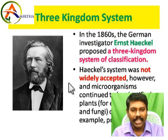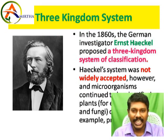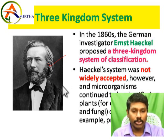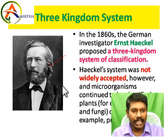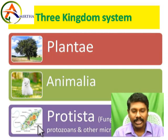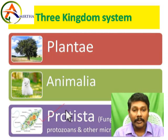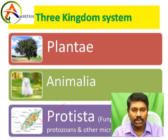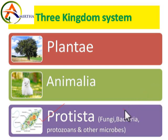Now the three kingdom proposed one. Here you can see that scientist Ernst Haeckel — a German scientist — proposed the three kingdom concept. In the Haeckel concept, the third kingdom is none other than Protista. Protista includes a lot of microbial organisms.